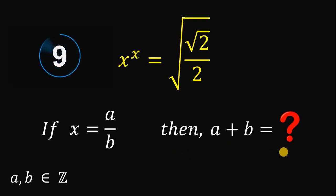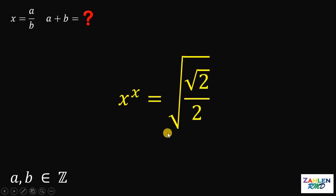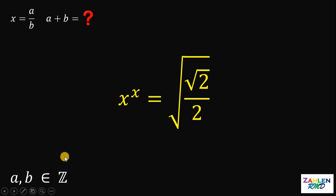You can pause this video if you want to give this problem a try. Now, let's answer this question together. So, given this equation x raised to x equals square root of square root of 2 over 2, and we know that x can be written as a over b, wherein a and b are both integers, then we want the value of a plus b.